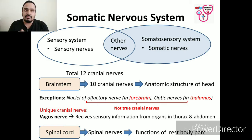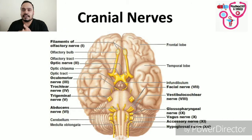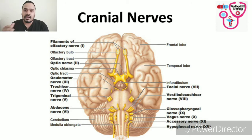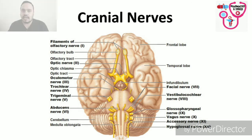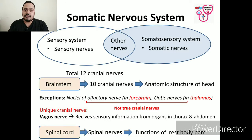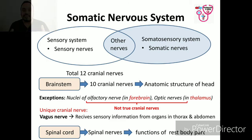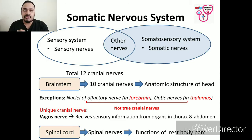There are 12 cranial nerves, 10 of which originate from the brain stem and mainly control the functions of the anatomic structures of the head. The nuclei of the olfactory nerve and the optic nerves lie in the forebrain and thalamus respectively, and are thus not considered to be true cranial nerves.